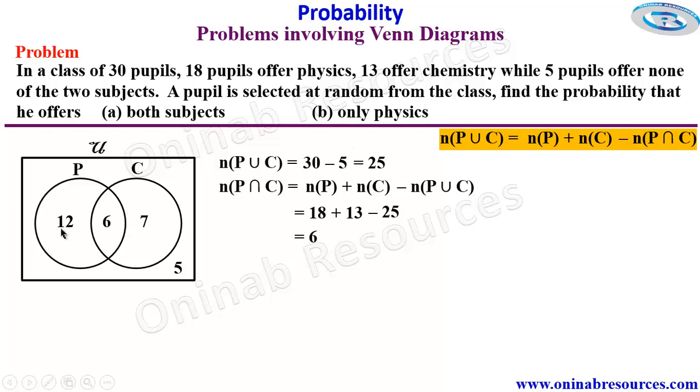So with this Venn diagram, we have the four groups of pupils. Those offering physics only, those offering both physics and chemistry, those offering chemistry only, and those offering none of the two subjects. If you add them up, you are going to have 30 pupils in the class.